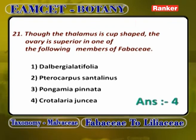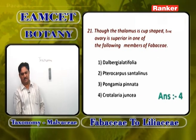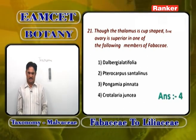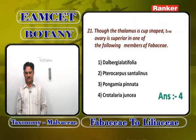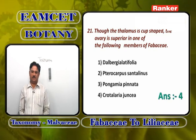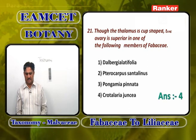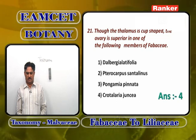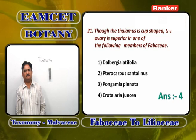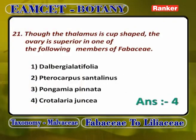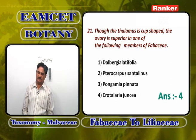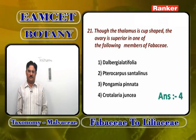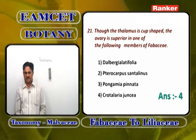Though the thalamus is cup-shaped, the ovary is superior in one member of Fabaceae. Fabaceae belongs to the series Calyciflorae. But in Crotalaria, a special stalk forms at the base of the ovary, making the half-inferior ovary superior. So the answer is Crotalaria juncea. In Crotalaria, the small stalk at the base makes the half-inferior/half-superior ovary become superior. Answer is 4.